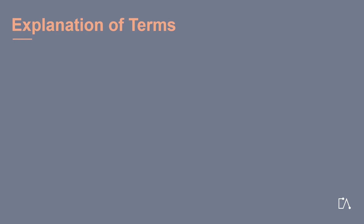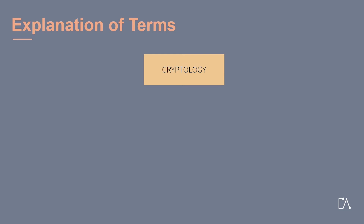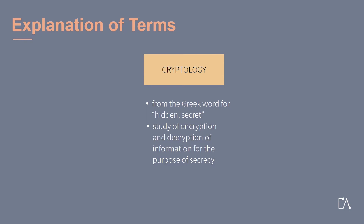First of all, we want to understand what the term cryptography actually means. Cryptography is a branch of cryptology. The name cryptology derives from the Greek word for hidden, secret. Consequently, cryptology is the study of the encryption and decryption of information for the purpose of secrecy. When talking about cryptology, we distinguish the two branches: cryptography and cryptanalysis.